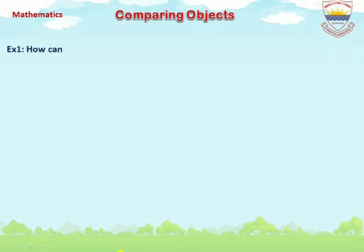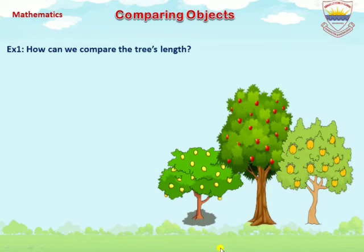Example 1: How can we compare the trees' lengths? Look at the picture — there are three trees: a mango tree, an apple tree, and an orange tree. We compare these trees according to their length.